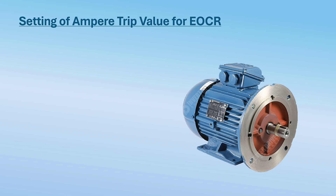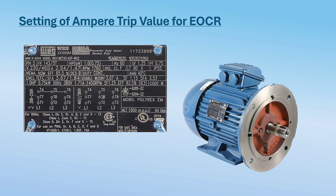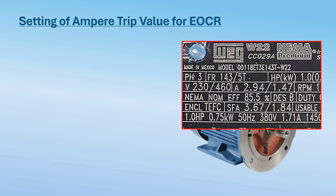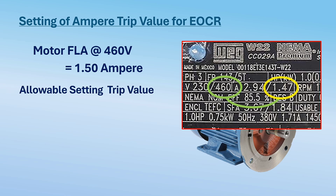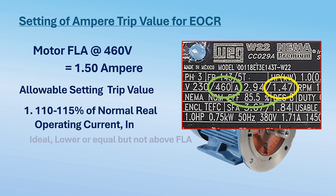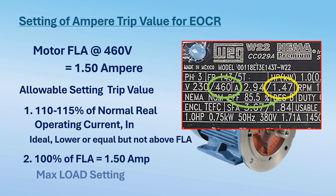Setting the ampere trip value for the EOCR: from the motor nameplate, the rated full load ampere or FLA is available. In this sample motor, it is a two-voltage motor — select the proper voltage and its equivalent FLA for your system. Since we are using 460 volts in this sample, the FLA of the motor is equivalent to 1.47 or around 1.50 amps. Ideally, set the EOCR ampere trip setting based on the motor's normal operating current, then multiply it by 110 to 115 percent. This should be lower than or equal to, but not above, the motor FLA. For this presentation, we will use 1.5 amperes as the overcurrent setting value.